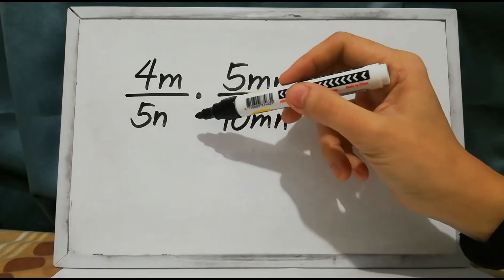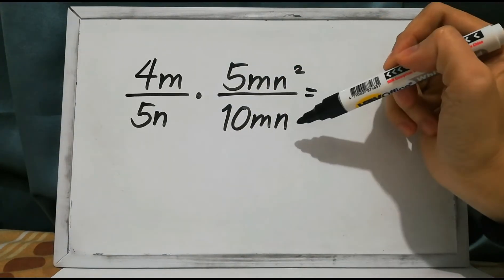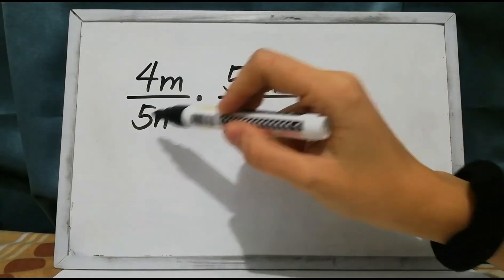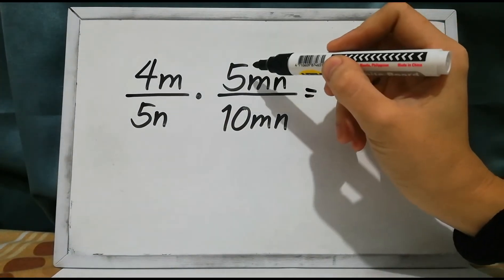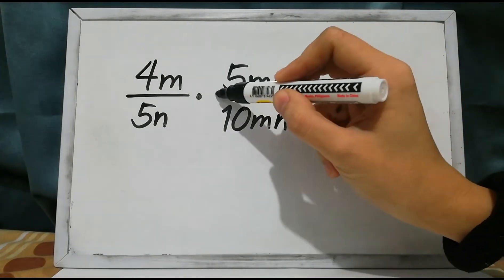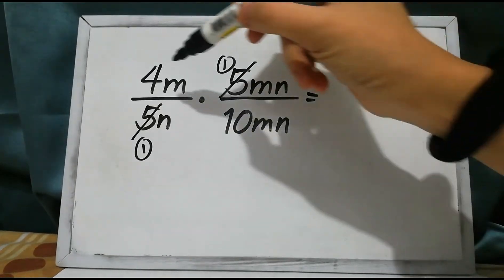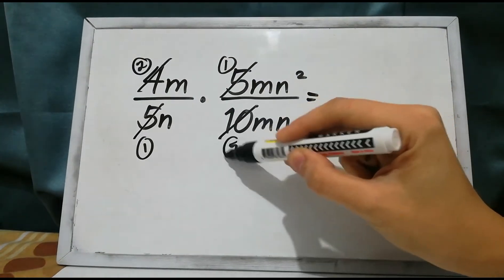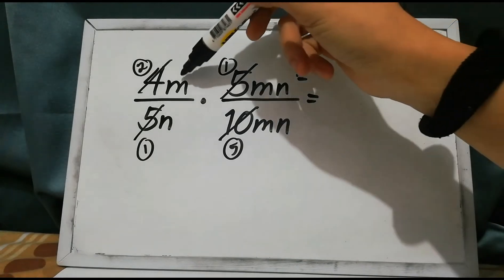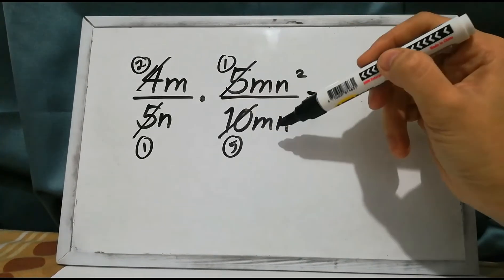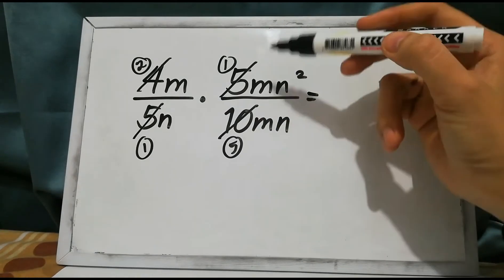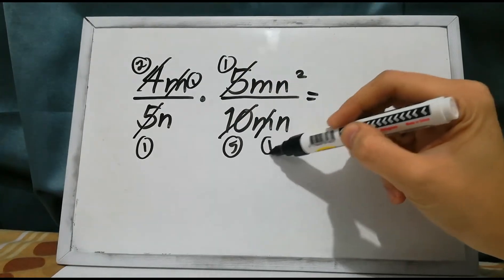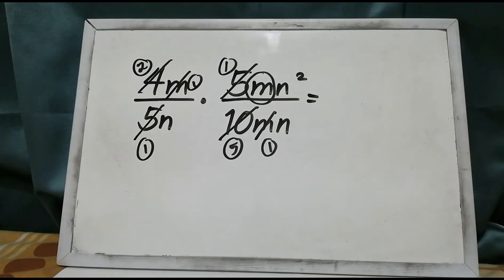For our next example, we have 4m over 5n times 5mn squared over 10mn. Look for the common factor. We have 5 and 5 — their common factor is 5, so each becomes 1. Then 4 and 10 have a common factor of 2: 4 divided by 2 is 2, and 10 divided by 2 is 5. For the variable m, there are 2 m's in the numerator and 1 m in the denominator, so m is the common factor: each m divided by m is 1, leaving 1m.